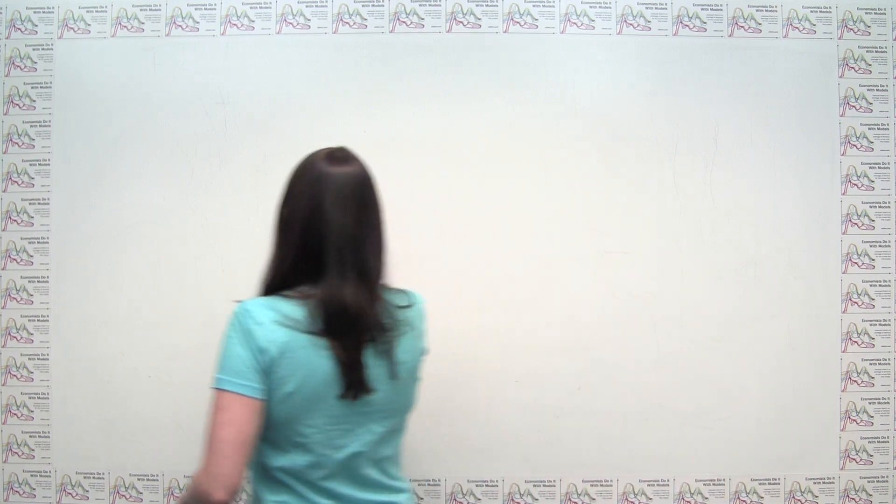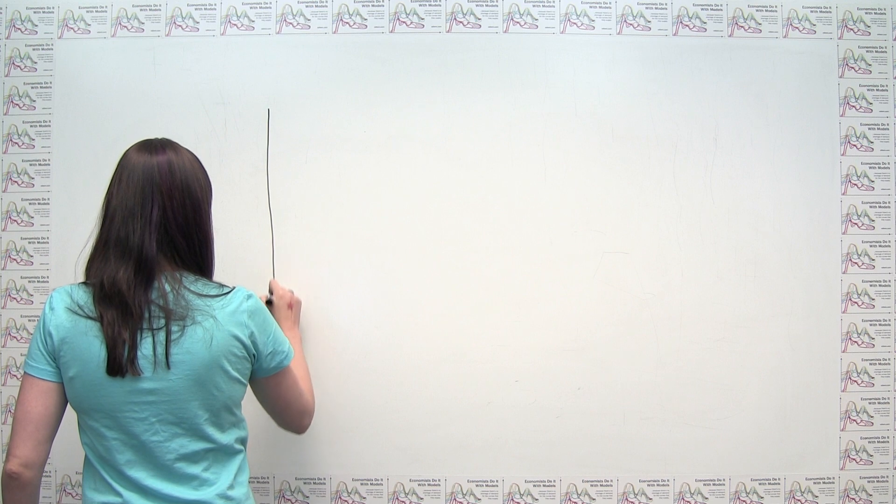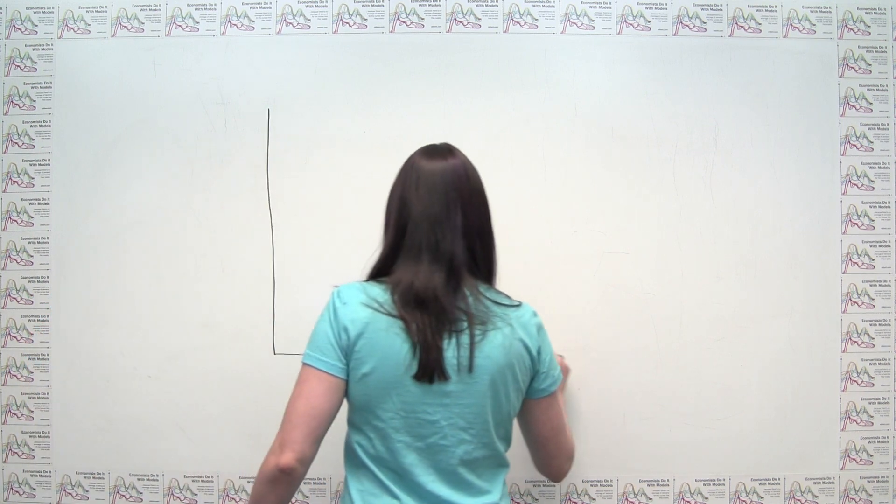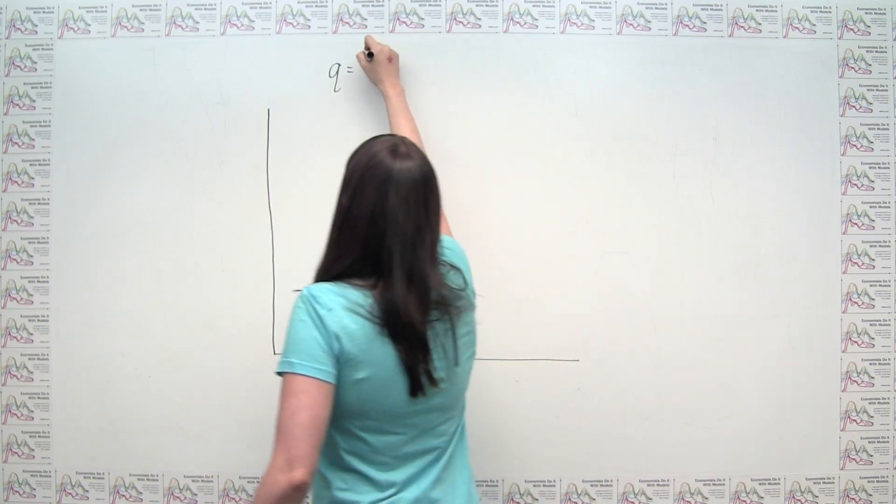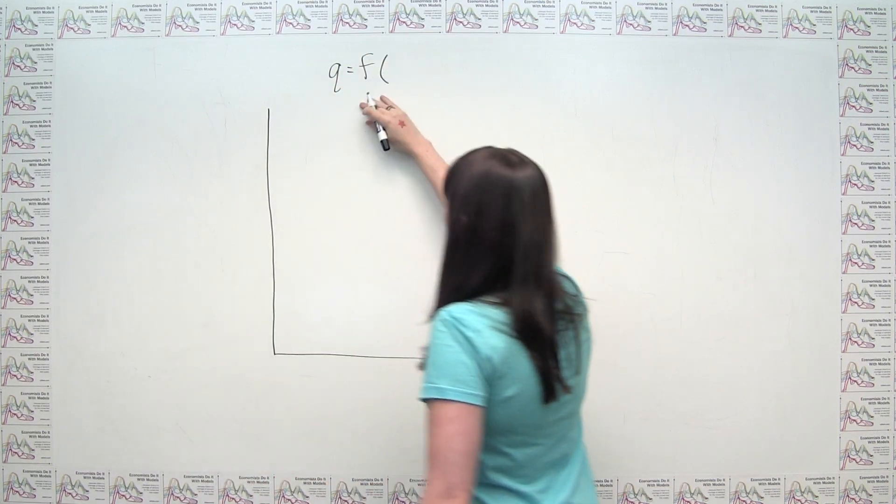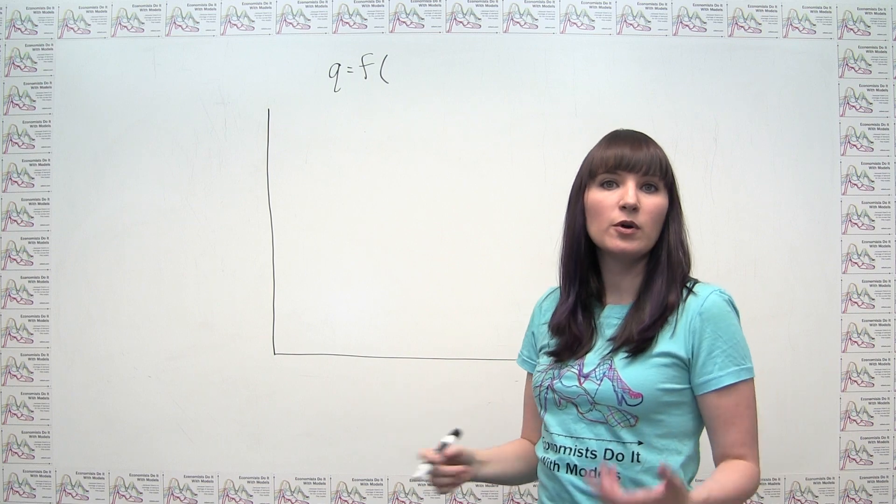But let's just to make this easy, let's think about a short run production function. Our short run production function is usually our quantity of output as some function of our variable input or inputs.